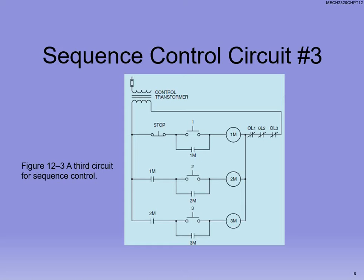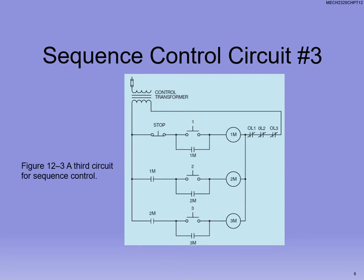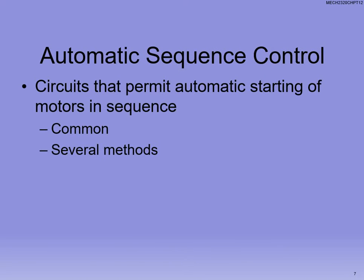The third method is almost identical to the previous method, only we've put the contactors for 1M and 2M before the push button instead of after. So in method 2, the 1M and 2M contactors are after the push buttons, and here they're before the push buttons — that's really the only difference. It still stops things because it's still in series, so it still works.